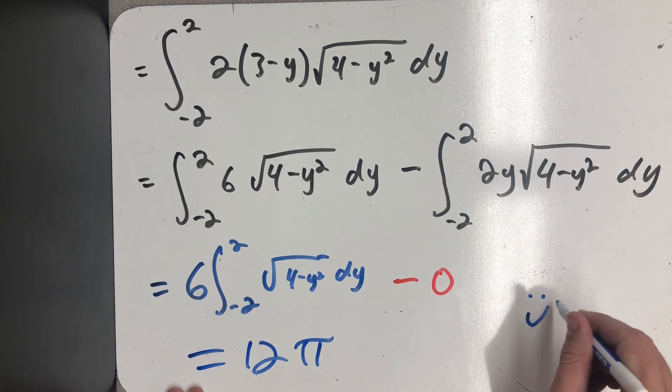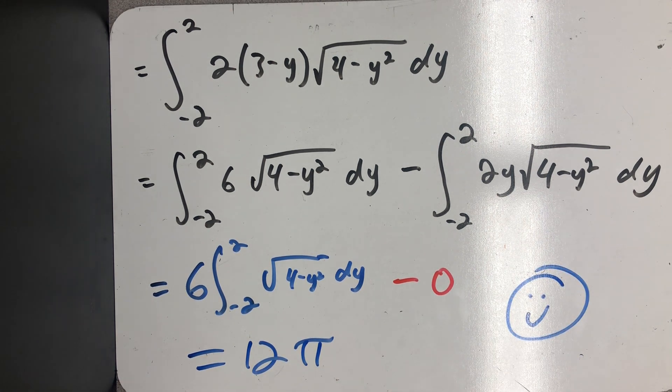And so I get the same value using either process. And of course, that's really what Fubini's theorem in its second form is telling me, that I could model the region either way, and they're the same double integral.